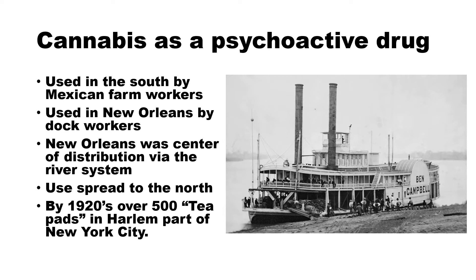During Prohibition in the 1920s, as alcoholic beverage places closed, they were replaced on the East Coast by tea pads. During the 1920s there were over 500 tea pads in the Harlem part of New York City alone — places where people would go to smoke marijuana or use other hashish or cannabis products.